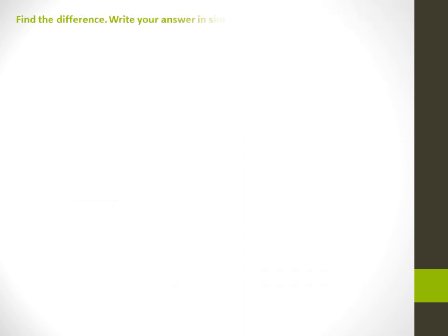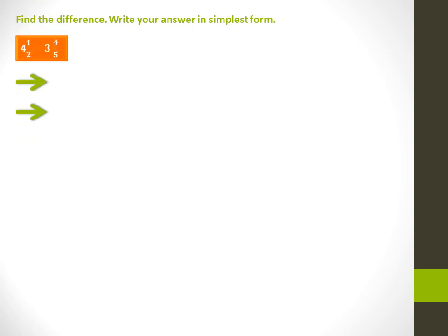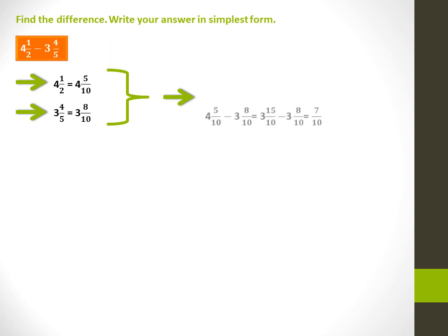Find the difference and write your answer in simplest form. 4 1 over 2 minus 3 4 over 5: a common denominator is 10. 4 1 over 2 is equal to 4 5 over 10, and 3 4 over 5 is equal to 3 8 over 10. Since 5 over 10 is less than 8 over 10, rename 4 5 over 10 as 3 15 over 10. The answer is 7 over 10.